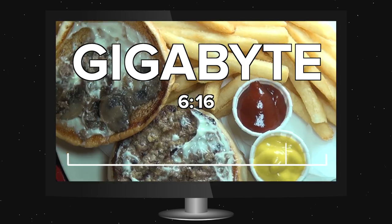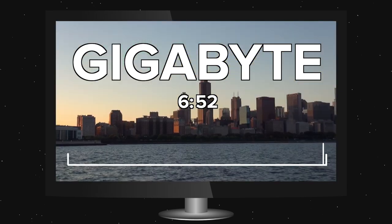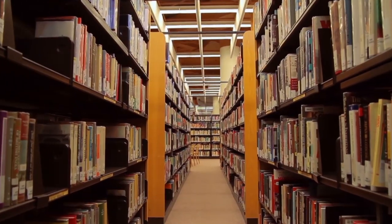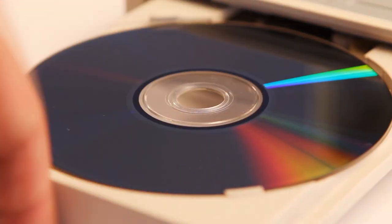And a gigabyte is already a lot of information. A gigabyte is seven minutes of HDTV. Two gigabytes is the information stored in a shelf of books 60 feet long. And a standard DVD can hold five gigabytes.